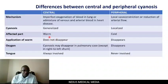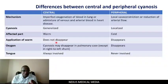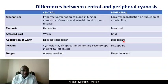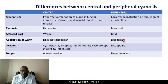On application of warmth: if you apply warmth in central cyanosis, the cyanosis does not disappear. In peripheral cyanosis, it disappears — because warming causes vasodilation, reversing the vasoconstriction and restoring blood flow.